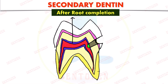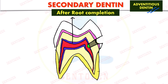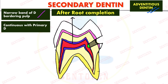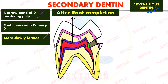First is secondary dentine. It forms after root completion and is also called adventitious dentine. Primary dentine is the one which forms before root formation is complete, and secondary dentine forms after that. It forms at the border of the primary dentine and the pulp — as a narrow band where dentine borders the pulp. It is continuous with primary dentine but is more slowly formed and has fewer tubules compared to primary dentine.